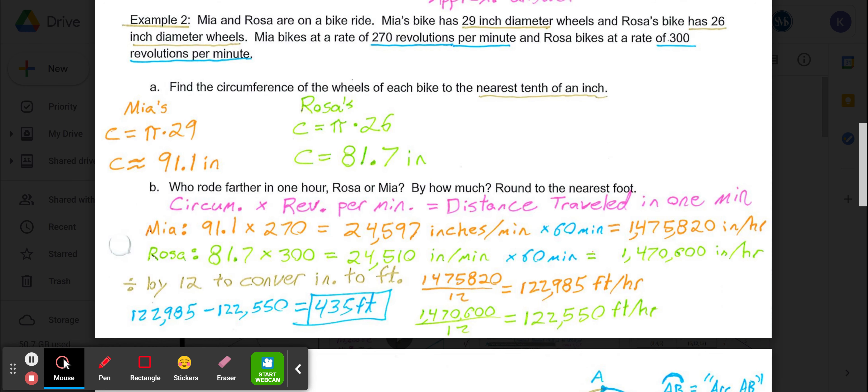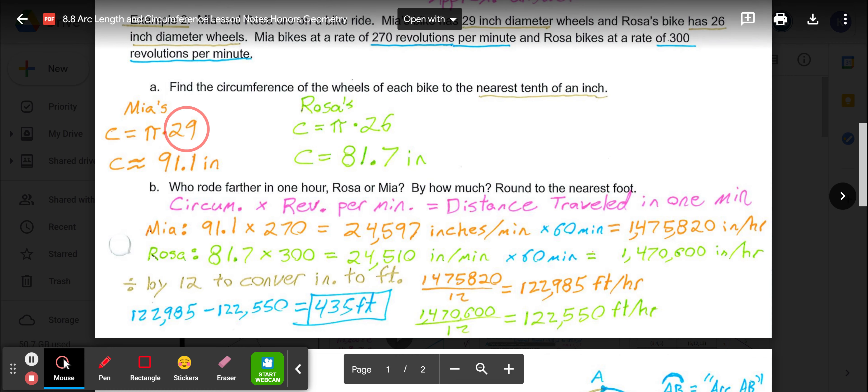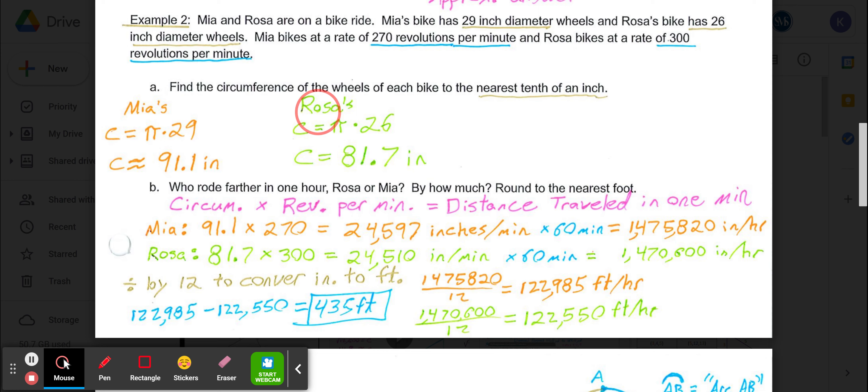Example 2 adds a real-life application. Maya and Rosa are on a bike ride. Maya's bike has 29-inch diameter wheels, Rosa's bike has wheels with 26-inch diameter. Maya bikes at a rate of 270 revolutions per minute, Rosa at 300 revolutions per minute. Part A wants us to find the circumference of each bike's wheels and round to the nearest tenth of an inch. For Maya, it would be π times 29, approximately 91.1 inches. Rosa's would be 26-inch diameter times π, approximately 81.7 inches.